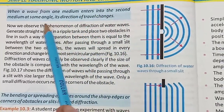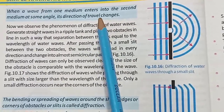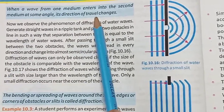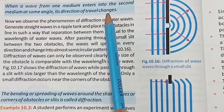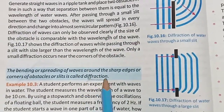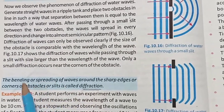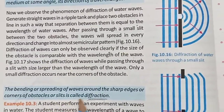Refraction of waves occurs when a wave from one medium enters into a second medium at some angle, and its direction of travel changes. This change in direction of travel is what we call refraction. The bending or spreading of waves around the sharp edges or corners of obstacles or slits is called diffraction.